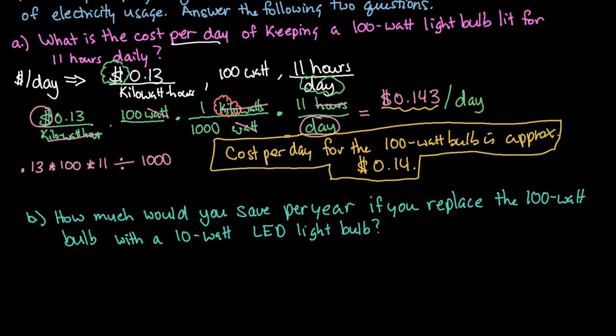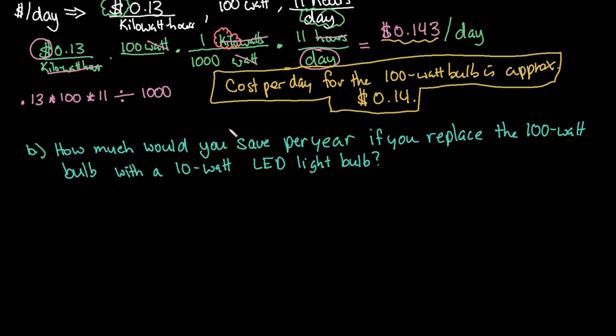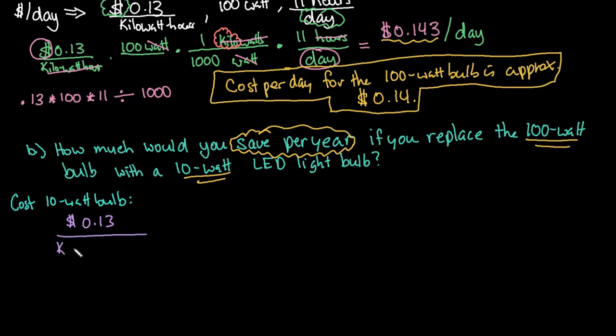So we're going to use this information in the next problem too because we want to know how much we could save per year if we replace the 100-watt bulb with a 10-watt LED bulb. So the first thing that we need to know is how much does it cost to run the 10-watt bulb? So we can just do the same procedure that we just did. We have our dollar amount. So we know that it is $0.13 per kilowatt hour.